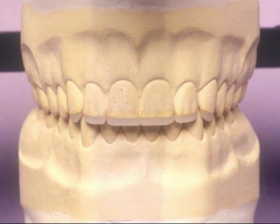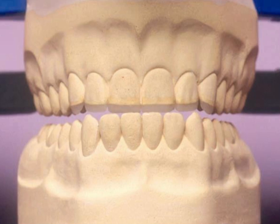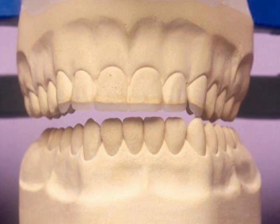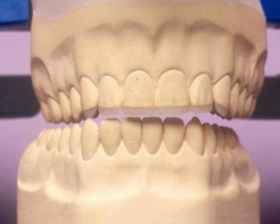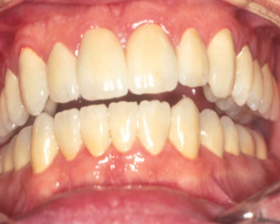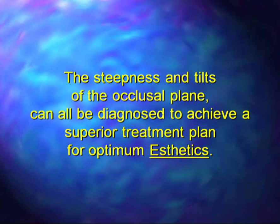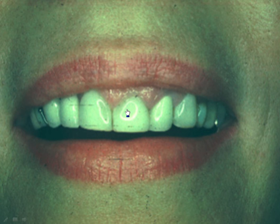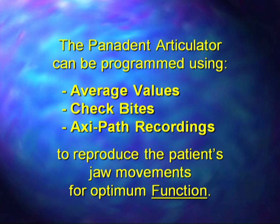Now we can check our occlusion — the state of being closed. We can check the act of closure from a protrusive position back into centric relation, as well as left lateral movement back into full occlusion, and right lateral movement. So when we make restorations in the laboratory, we can be assured that they'll fit and function correctly when we go to the mouth. The steepness and tilts of the occlusal plane can all be diagnosed to achieve a superior treatment plan for optimum aesthetics. So if you have dental midlines that are off, unsymmetrical gingival tissues, or canted occlusal planes, you can get all of that straightened out the first time.